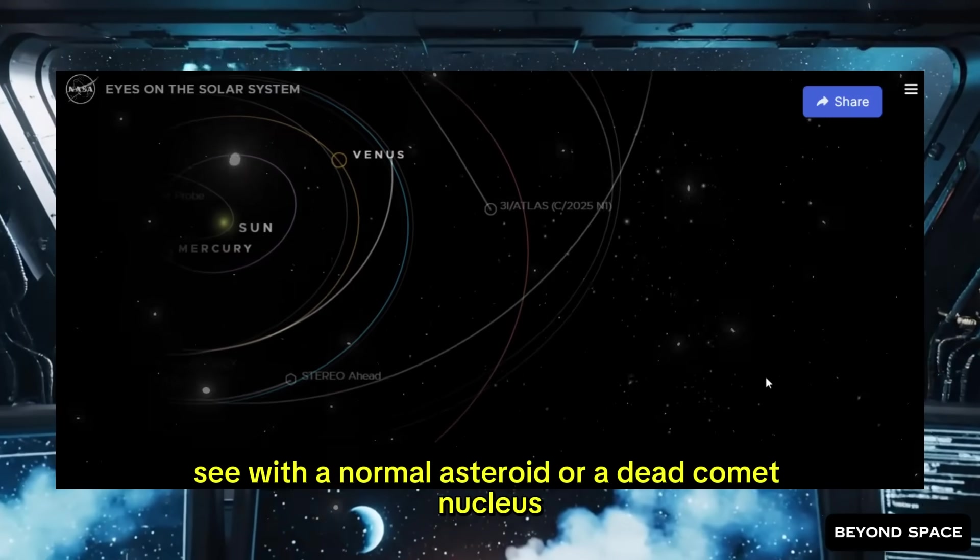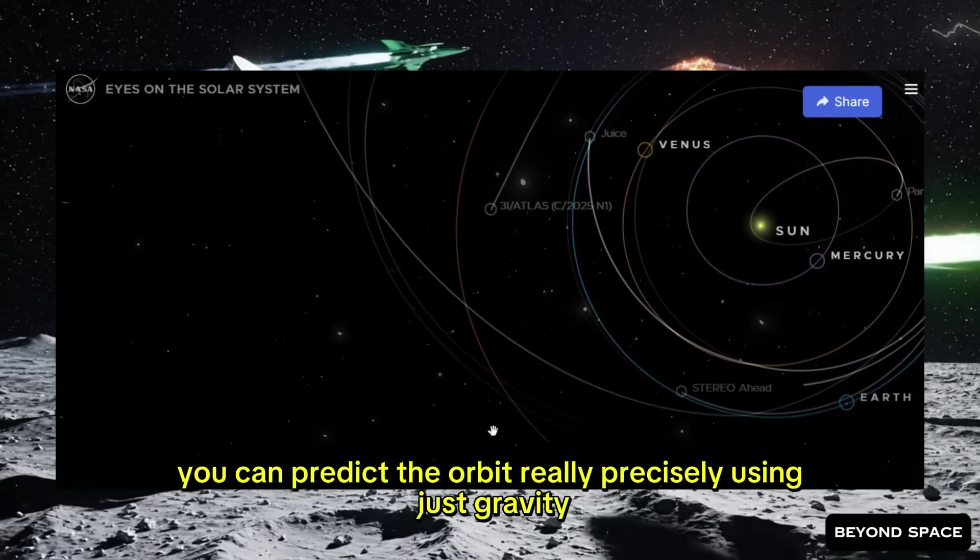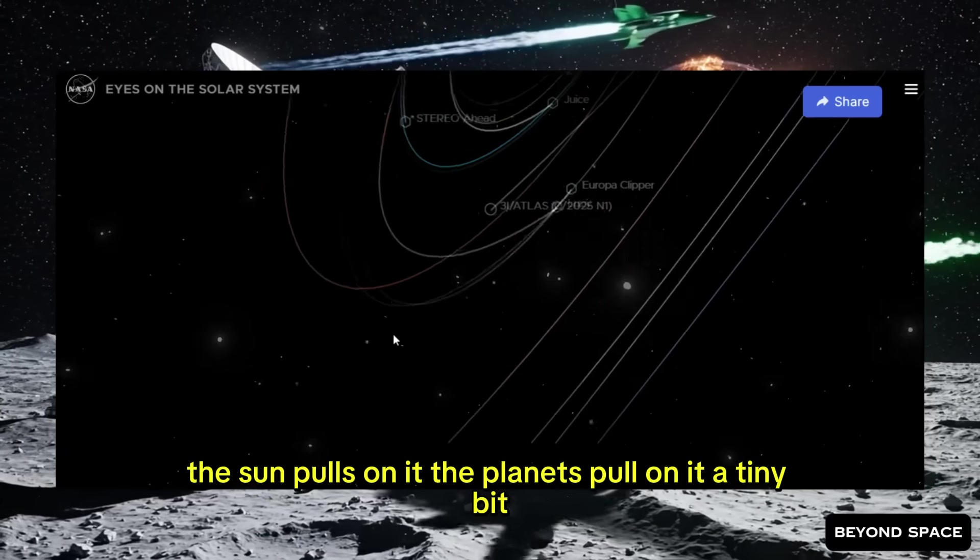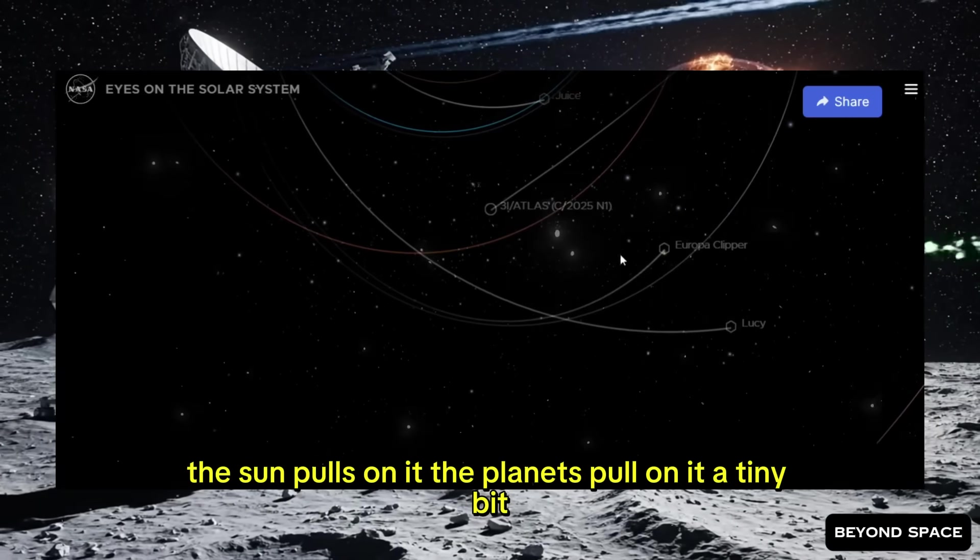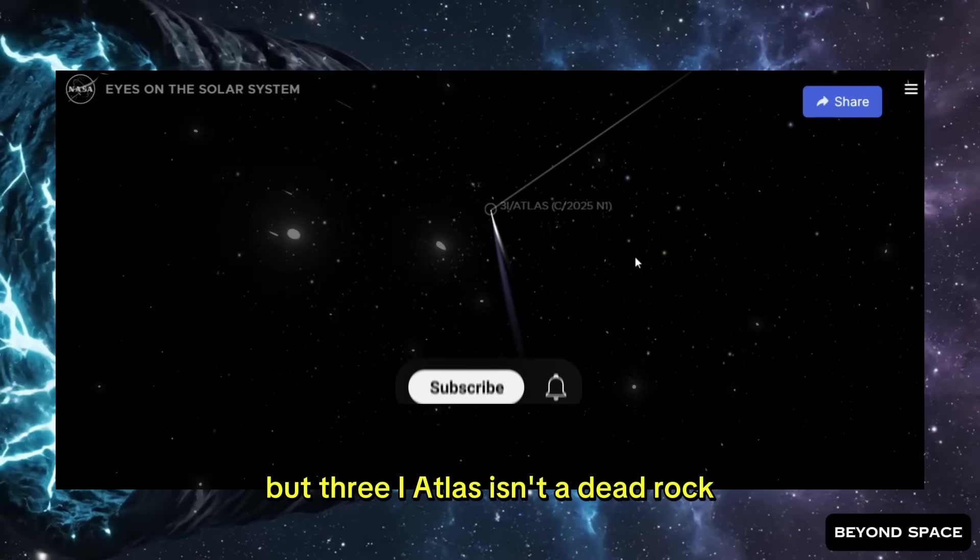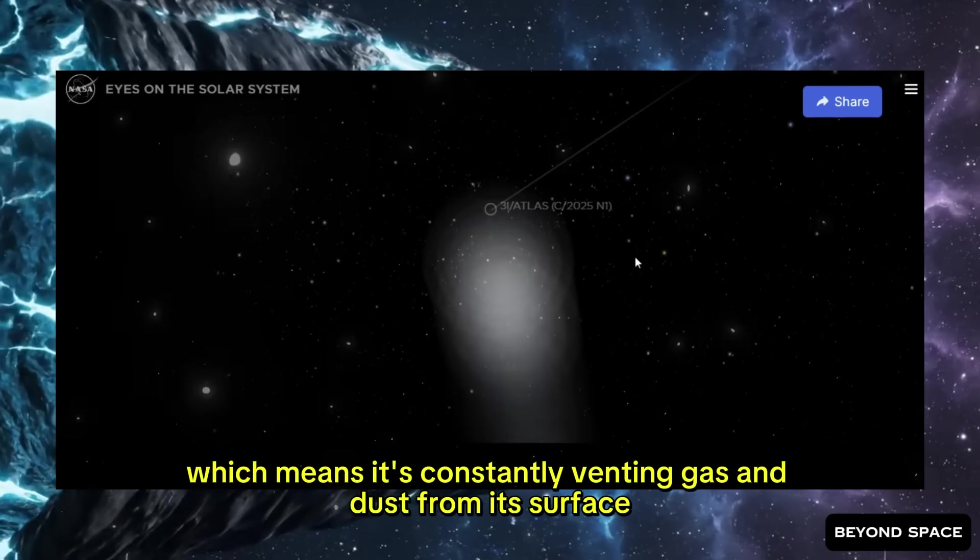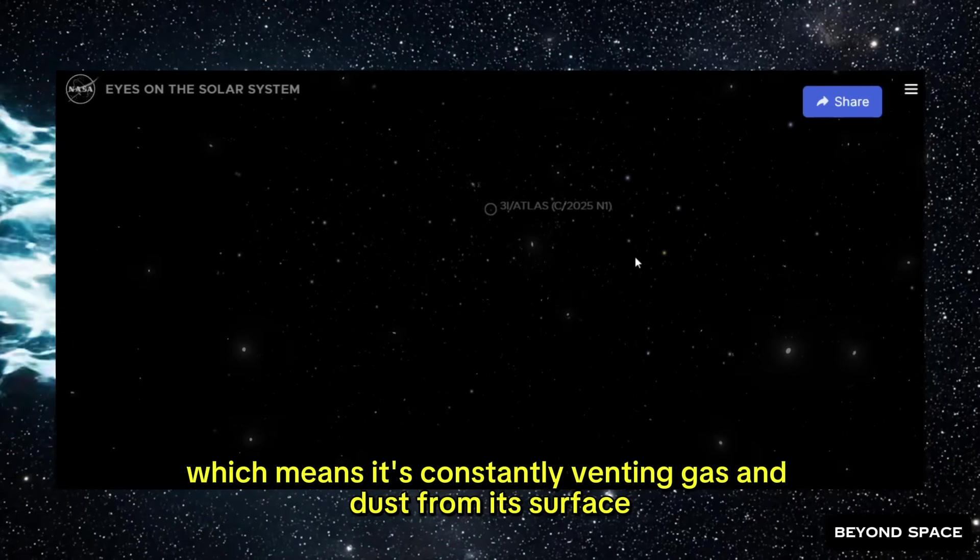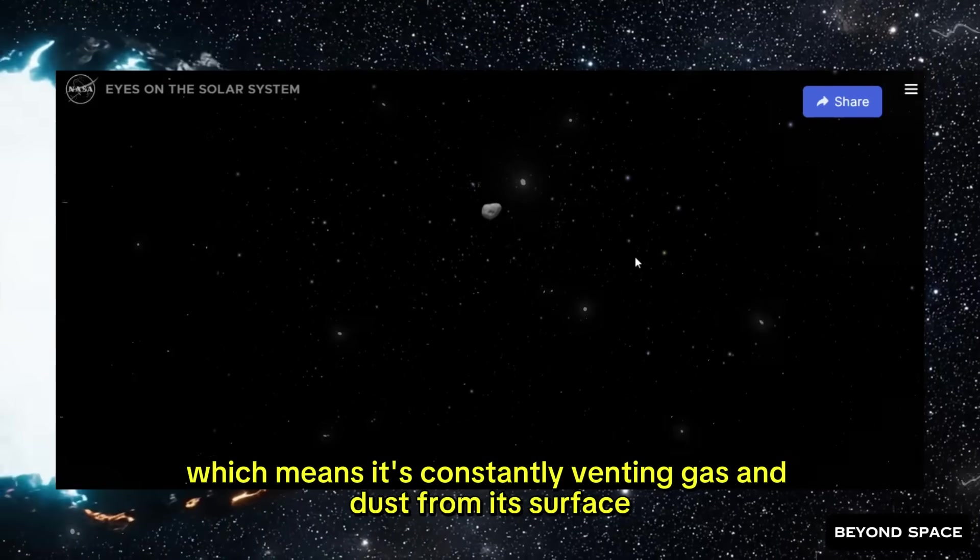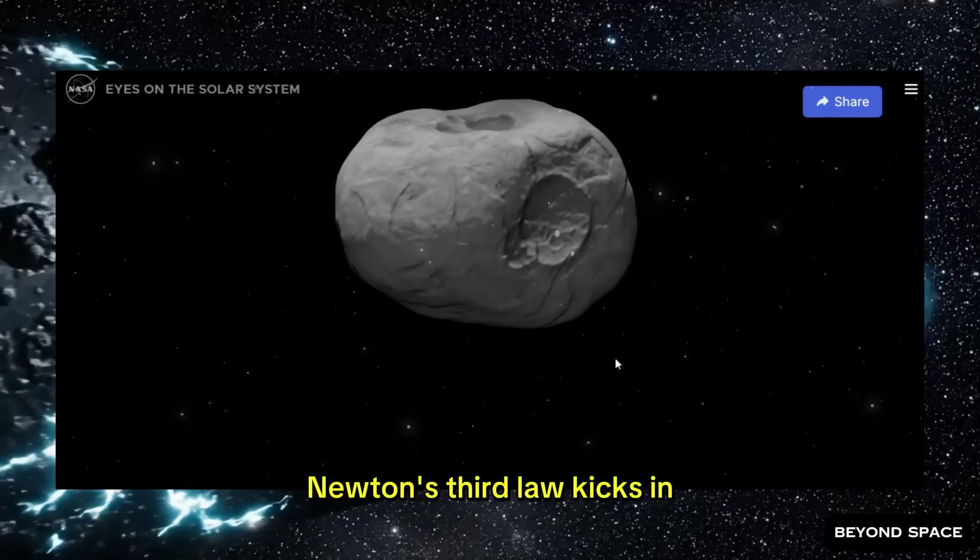But that's not what happened. The residuals didn't just get slightly bigger. They lined up in a pattern, all pointing in a new direction. And that's significant because it means something about the comet's motion has fundamentally changed. See, with a normal asteroid or a dead comet nucleus, you can predict the orbit really precisely using just gravity. The sun pulls on it. The planets pull on it a tiny bit.